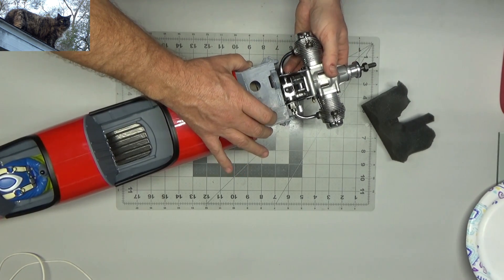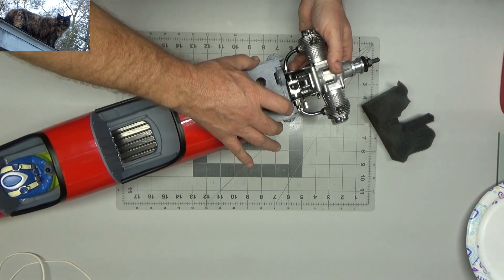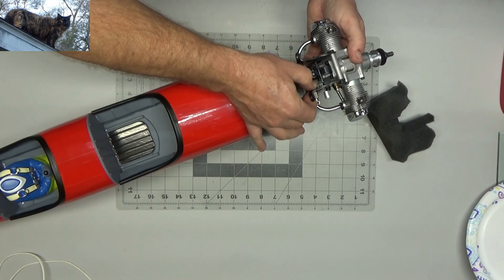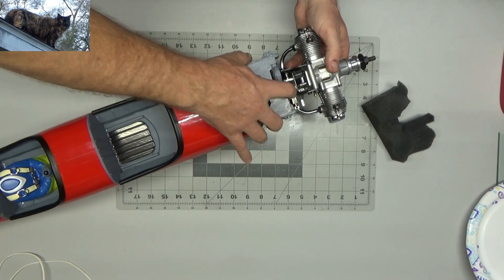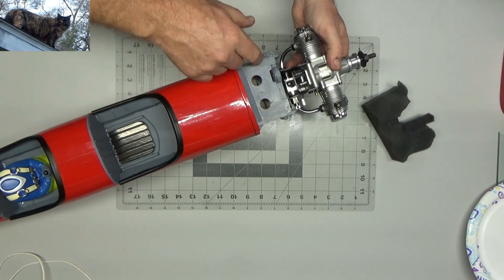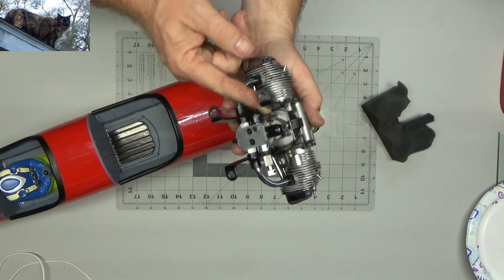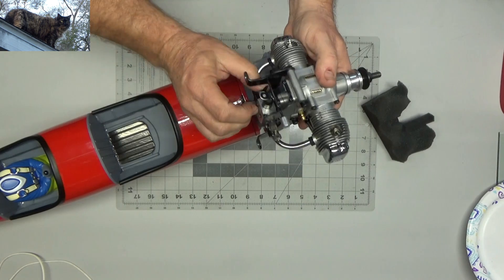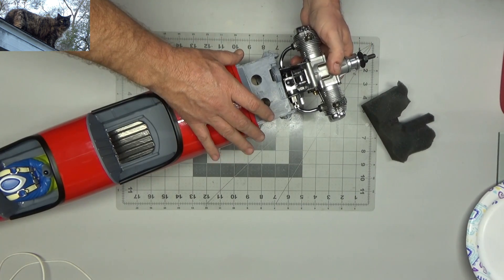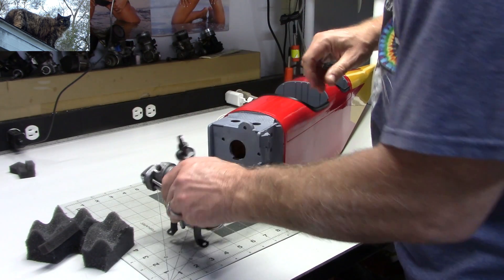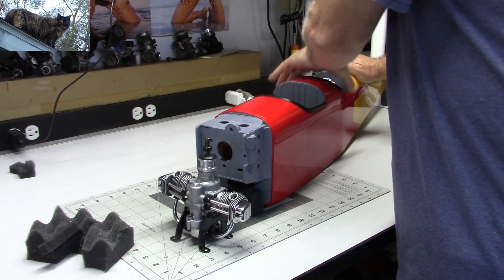So the only things that would really be somewhat challenging is maybe just positioning the fuel line. And of course, the throttle connection on this engine is right here. So it's almost right on the center line, which is okay because it comes out right about where the fuel tank is designed to poke through there.